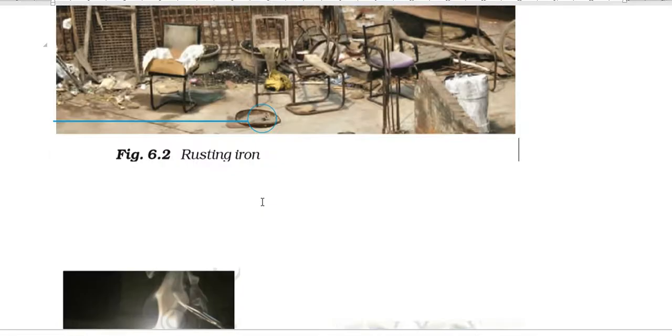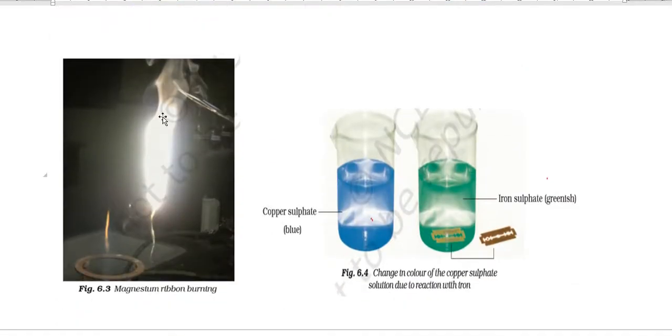This is an example of magnesium ribbon burning. When we burn magnesium, magnesium oxide is made. This is a new product, so this is a chemical change.